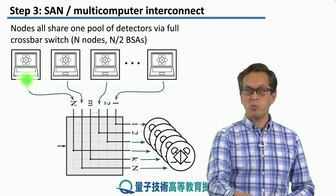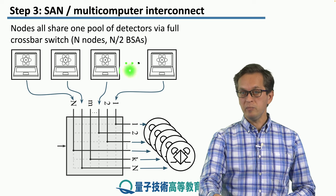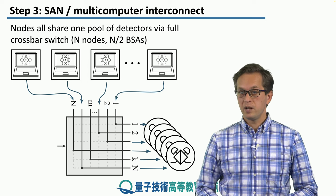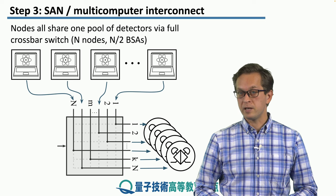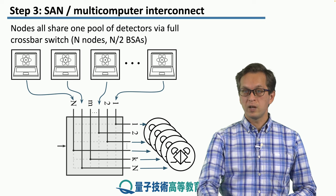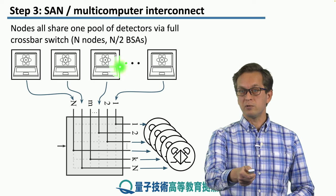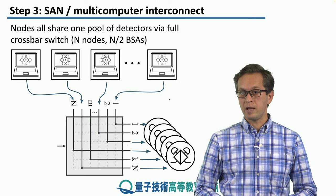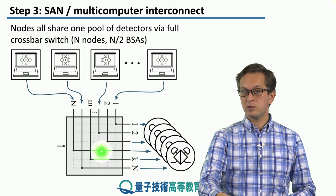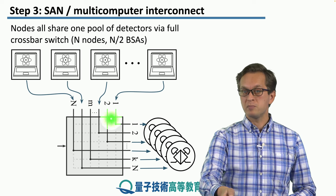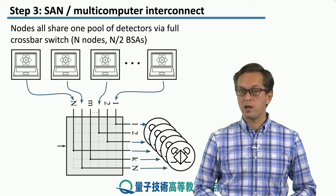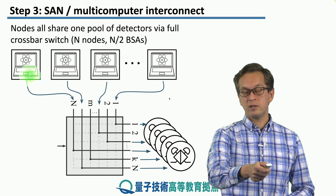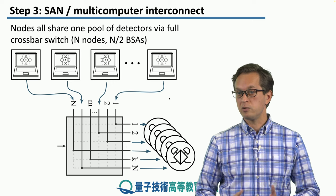This is the approach we are developing in Aqua: rather than a standard crossbar, we arrange our N computational nodes as inputs, and on the output side we connect to BSAs. This reduces the number of BSAs required to N over 2. For example, if one node wishes to talk to another, they emit photons that couple into the input ports of the N-by-N crossbar switch. We set the switch configuration so those two photons meet at the output ports of one BSA, which interferes them together, allowing the two computational nodes to create an entangled link they can use for communication.